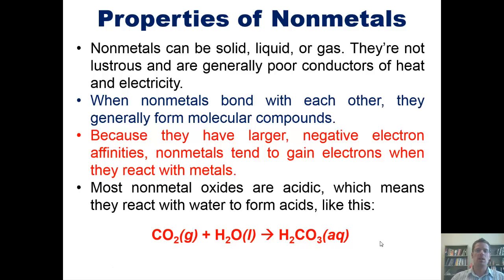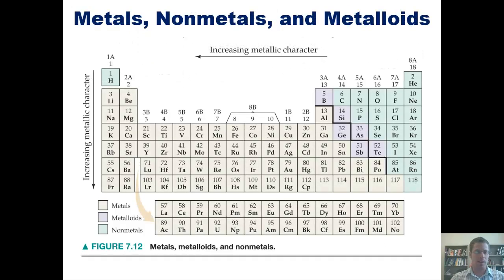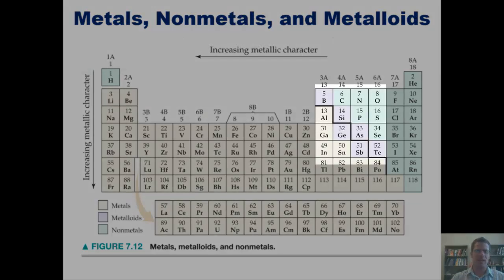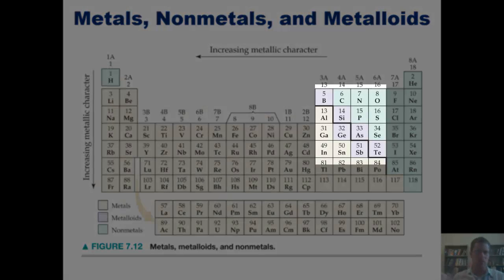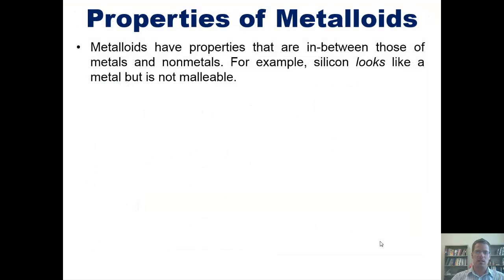Now we'll discuss the properties of metalloids. Metalloids have properties that are in-between those of metals and nonmetals. You can see on the periodic table, for example, that metalloids kind of straddle that in-between world that traverses metals and nonmetals. For example, silicon looks like a metal but is not malleable.